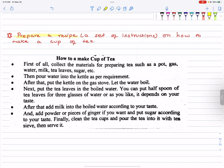Prepare a recipe, a set of instructions on how to make a cup of tea. How to make a cup of tea? First of all, collect the materials for preparing tea such as pot, gas, water, milk, tea leaves, sugar, etc.